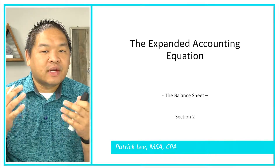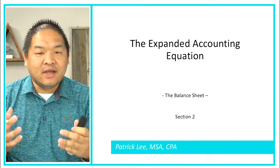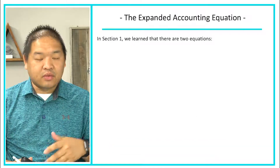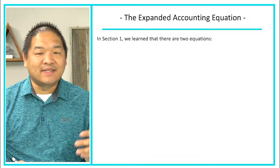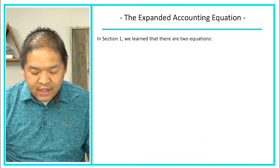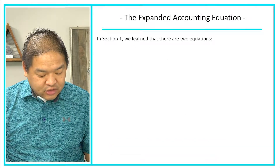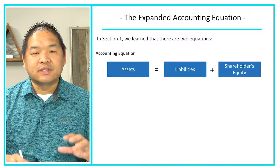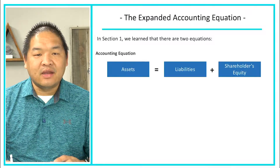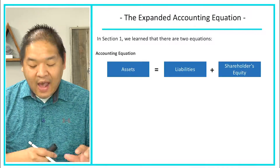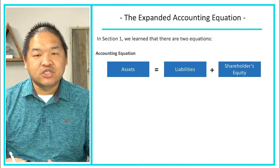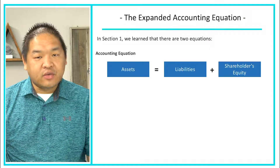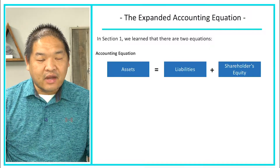So that's what we're going to help you learn in this lesson. As a reminder, in section one, we learned two equations. The first equation was the basic accounting equation: assets equals liabilities plus shareholders equity.